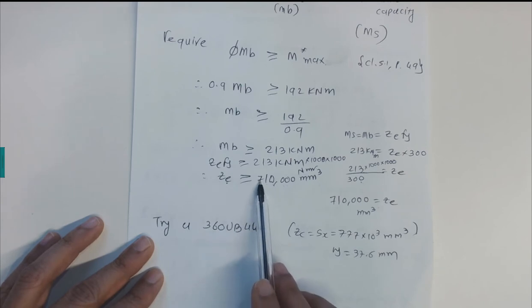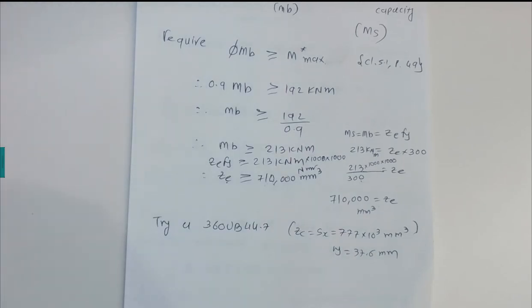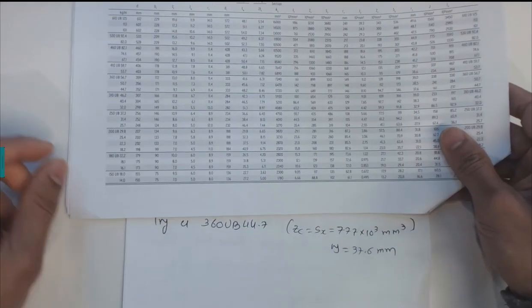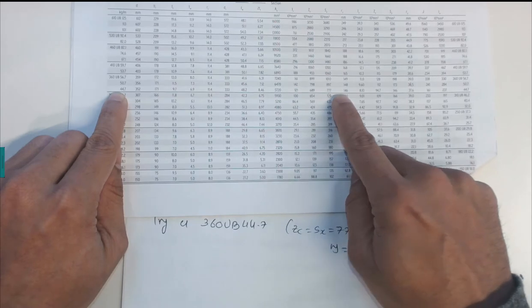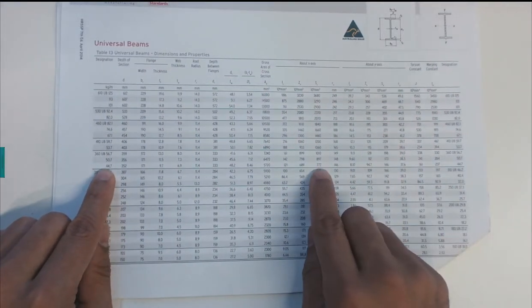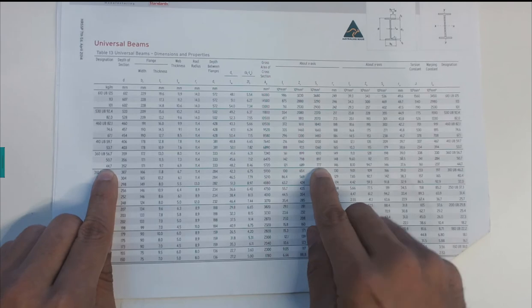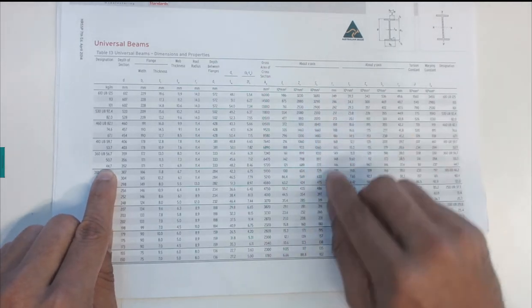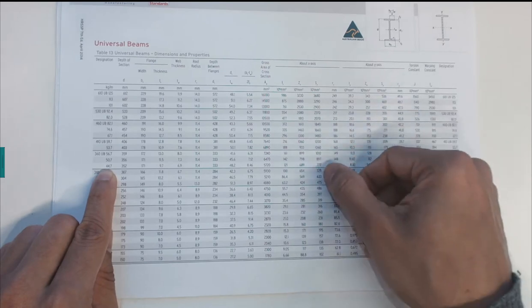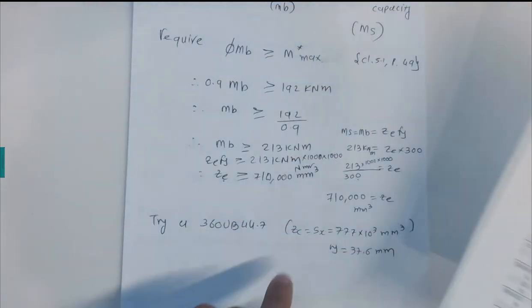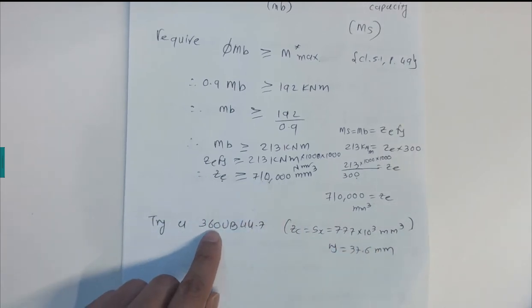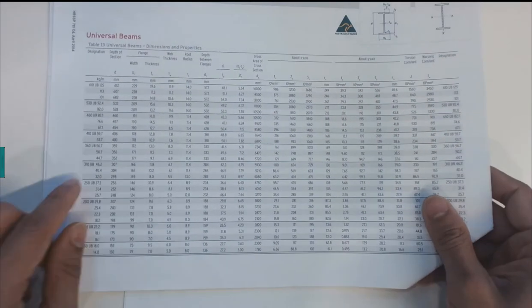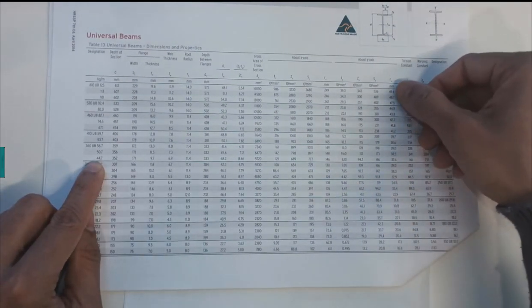Going to the OneSteel tables and scanning for a Ze value greater than 710 × 10³ mm³, we select a 360UB44.7. This section has a Sx value of 777 × 10³ mm³, which is greater than 710 × 10³ mm³. The radius of gyration ry for the 360UB44.7 is 37.6 millimeters.